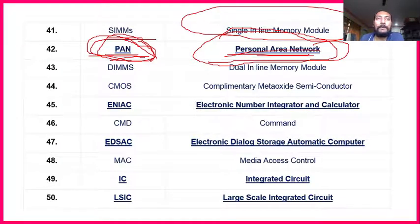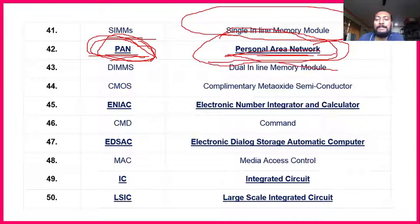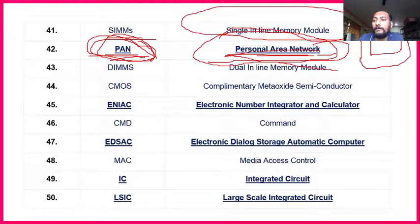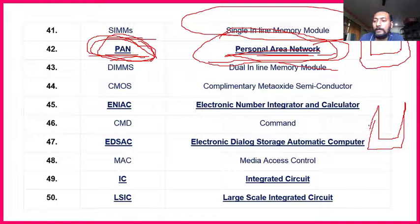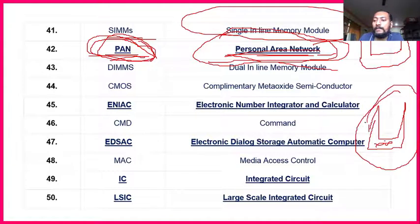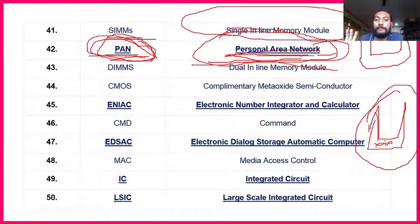Personal Area Network: in your community or society, 10 or 14 families make one network for personal use. For example, you purchase a router — a device with horns for Wi-Fi at home. By using this router network at home, you get an internet connection. That is called Personal Area Network (PAN) — only for personal use, not for government or other sectors.